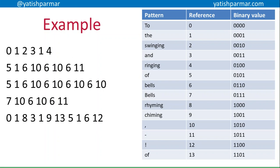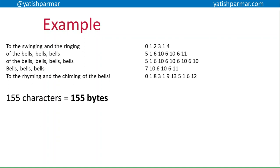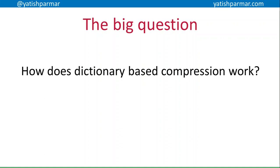So my passage now looks something like this — the text has been turned into a bunch of binary strings, which it was anyway, but they're now smaller binary strings. Comparing the original to the compressed text: the original was 155 characters, so transmitted by ASCII that's 155 bytes, or 310 bytes if Unicode. Comparing to my compressed text, there are 41 patterns, so that's 20.5 bytes — rounding up to 21 bytes — plus my dictionary of 61 bytes, giving a total of 82 bytes for transmission. That's smaller than the original 155 bytes, and if it were Unicode, obviously it would be much smaller. So you should now have an idea of how dictionary-based compression works: by extracting the patterns, then replacing the original data with dictionary references.